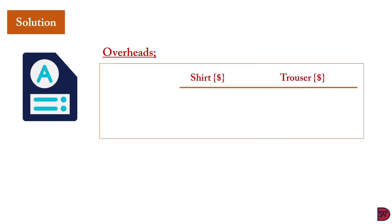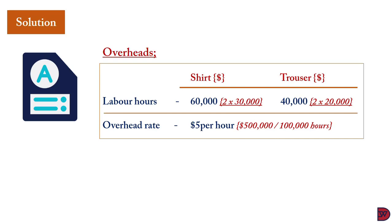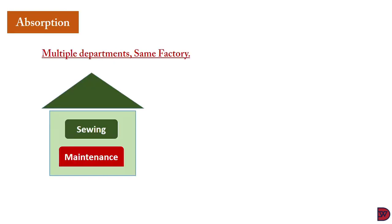To determine the overhead cost per unit, we first apportion overheads onto the products based on labor hours. Total labor hours for shirts: 30,000 shirts × 2 hours = 60,000 hours. For trousers: 20,000 × 2 hours = 40,000 hours. Total labor hours = 100,000. The overhead rate is $500,000 ÷ 100,000 hours = $5 per hour. Since it takes 2 hours to produce a shirt, the overhead absorbed is 2 × $5 = $10 per product.